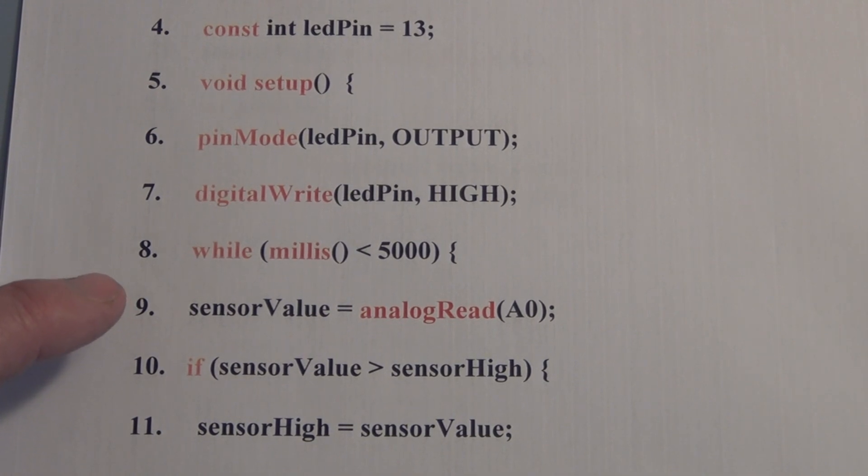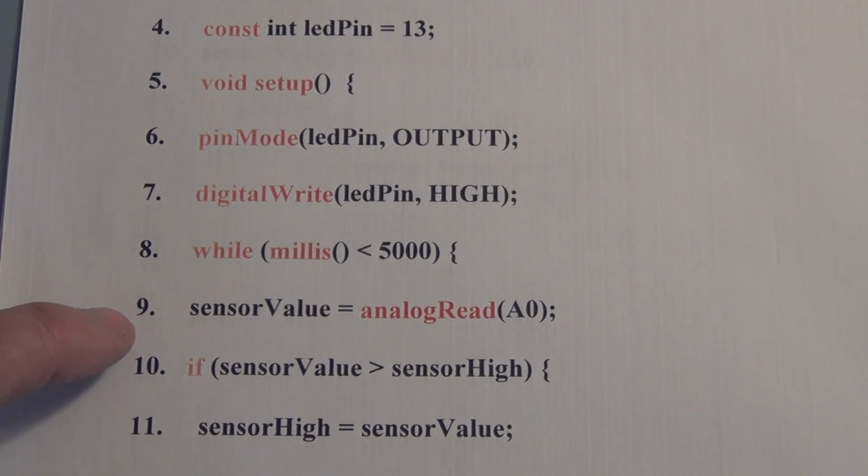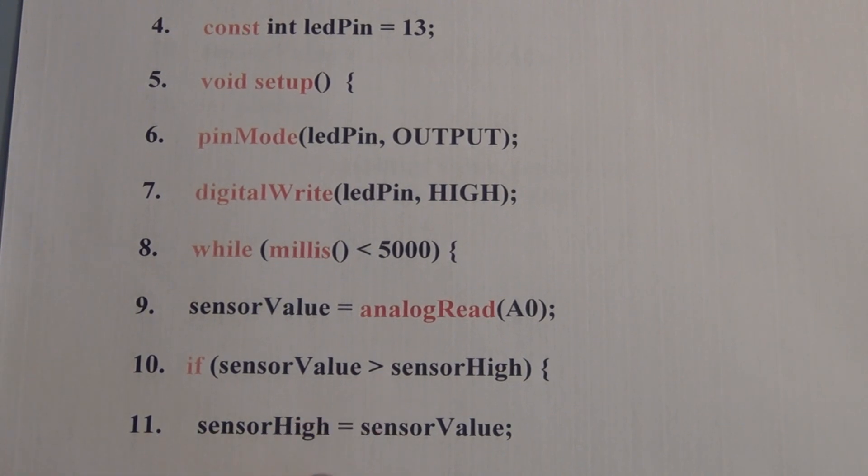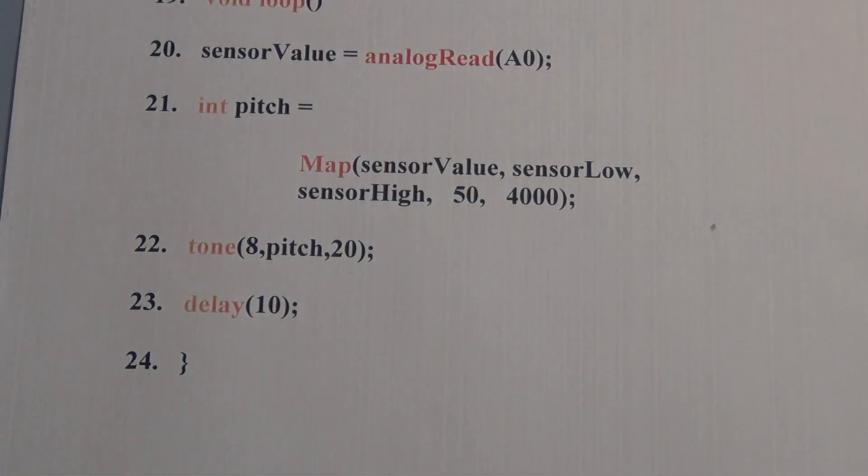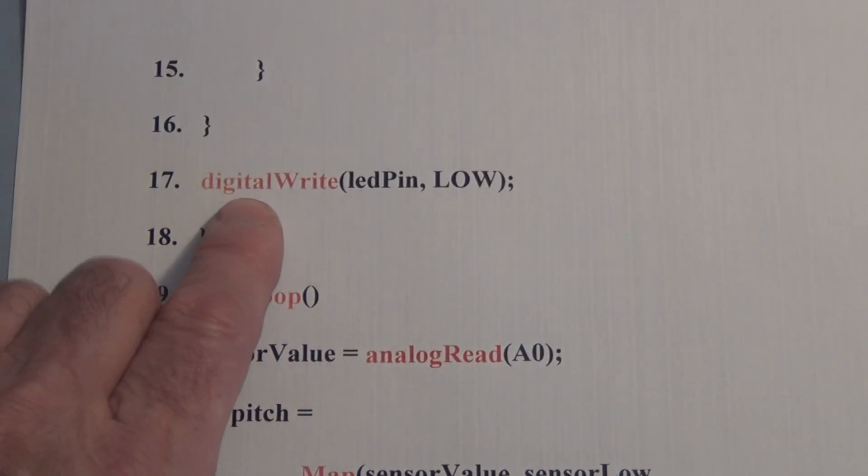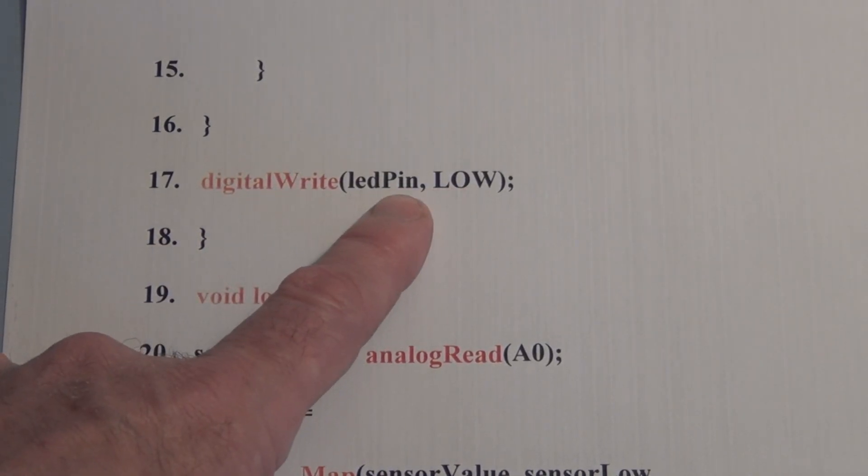The next part of the program performs a five second calibration. For five seconds the microcontroller looks at the voltage at A0 which is proportional to the light range in a room and assigns new high and low values to sensor high and sensor low. After five seconds this digital write turns the LED on pin 13 low.